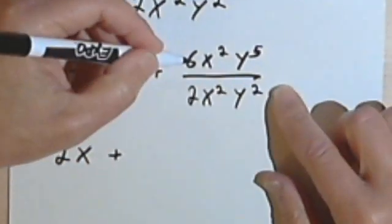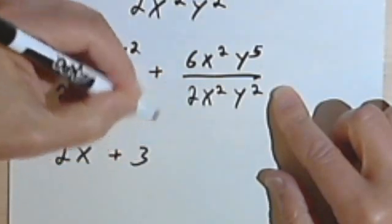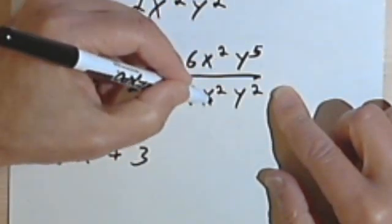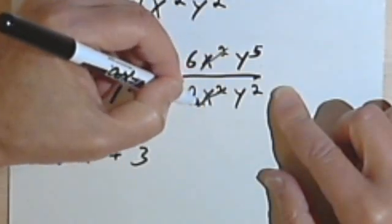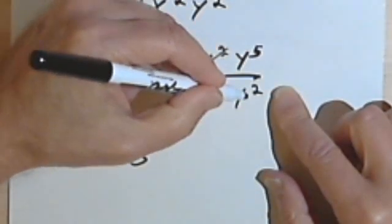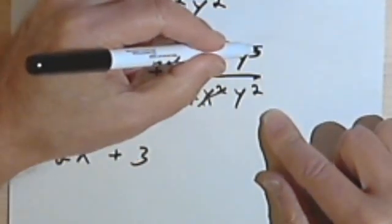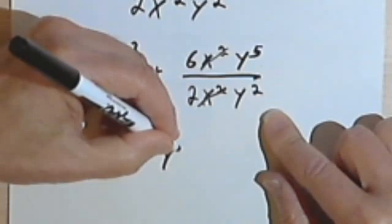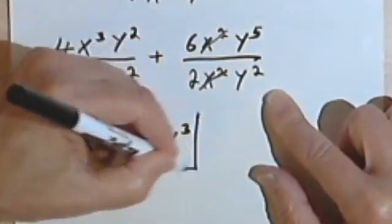Now we're just going to the second fraction. 6 divided by 2 is 3. x² divided by x², both of these will cancel. And y⁵ over y², well, we subtract the 2 from the 5, that'll give me a 3, and I'm going to get y³. So that's my answer.